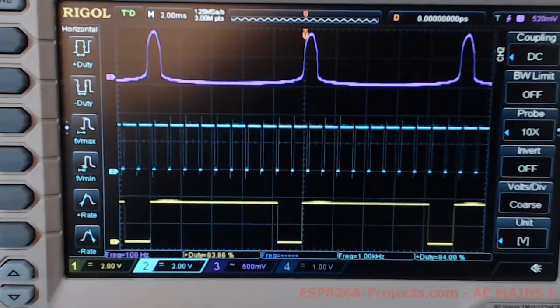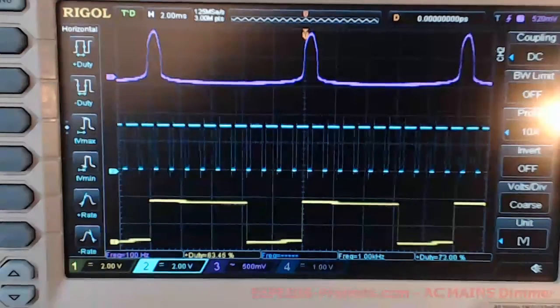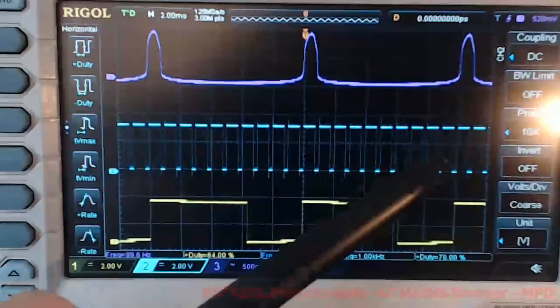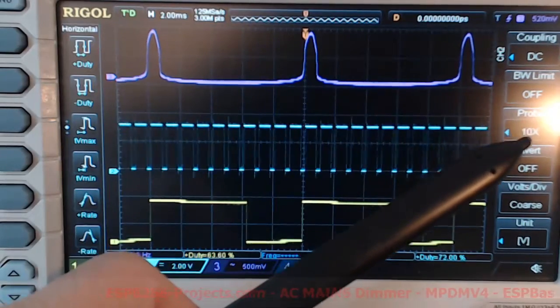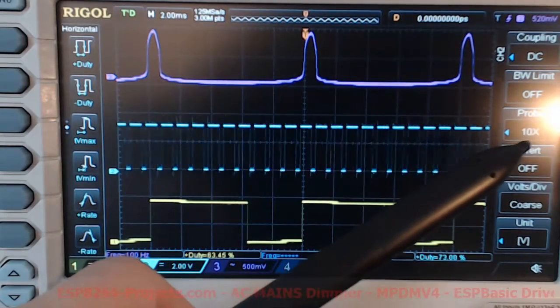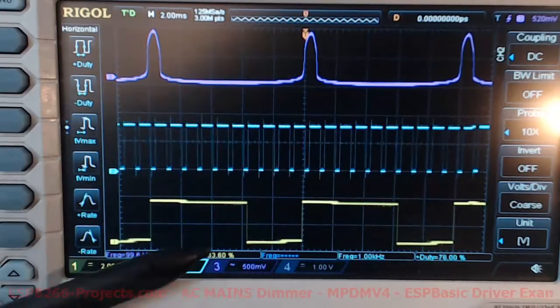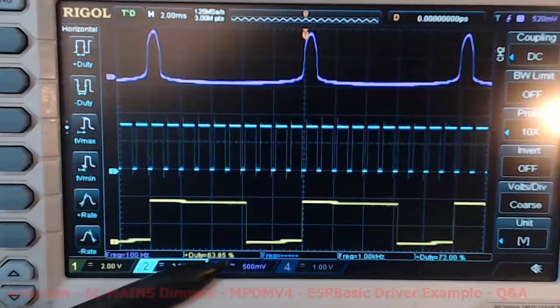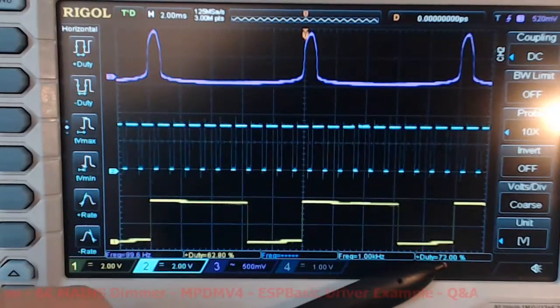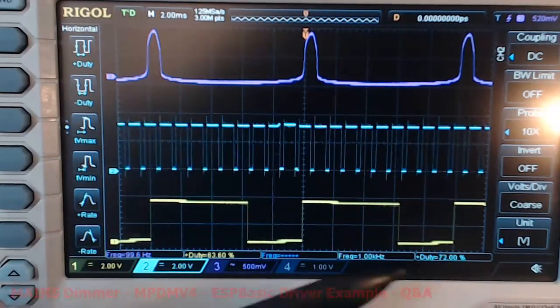I'm going down a bit. Now you can see here on the reflection the light is becoming higher. The duty cycle is reducing. Now we have around 63% on the output and the duty cycle on the input is 72%.